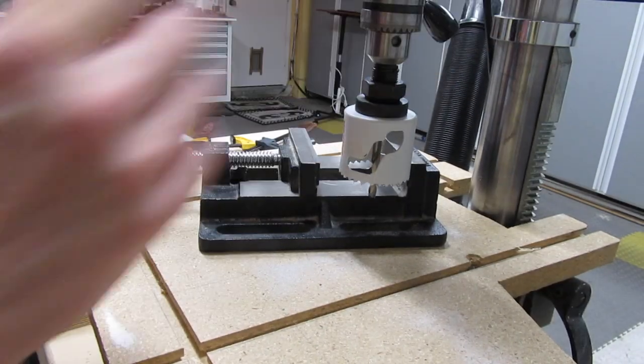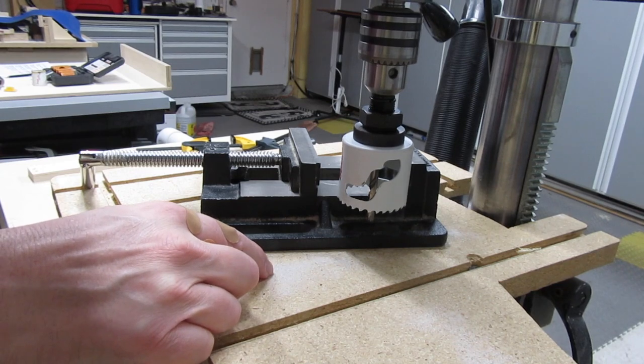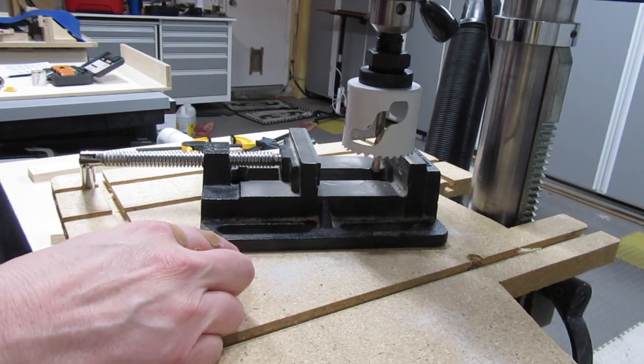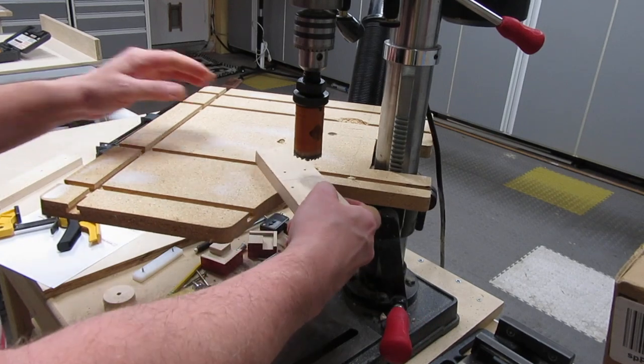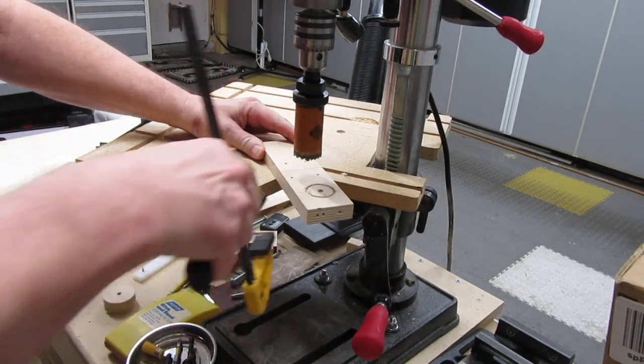Also, check to see if the pilot bit will end up extending past the bottom of the vise. And if it does, use a backing board, or adjust the height of the pilot bit. If your drill press's table swings around, you may be able to clamp the stock so it overhangs the table, and drill that way.